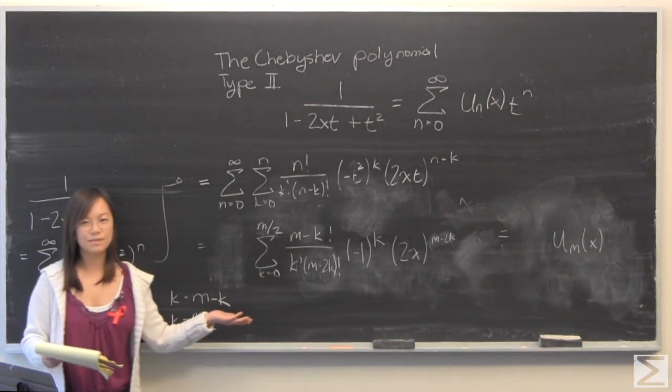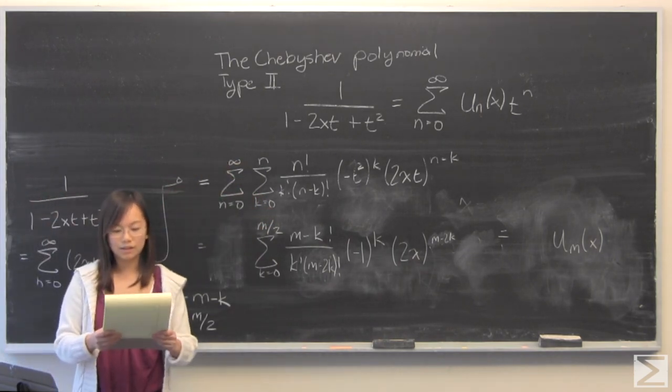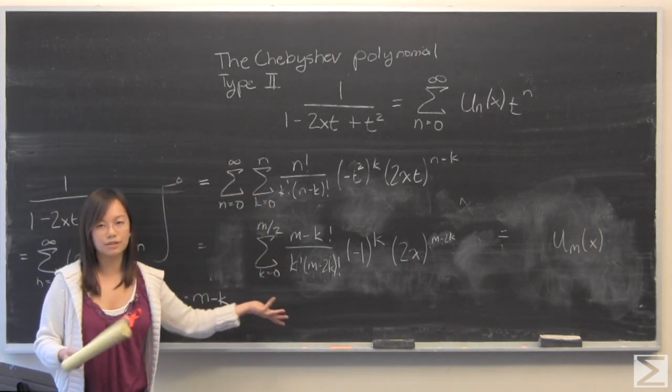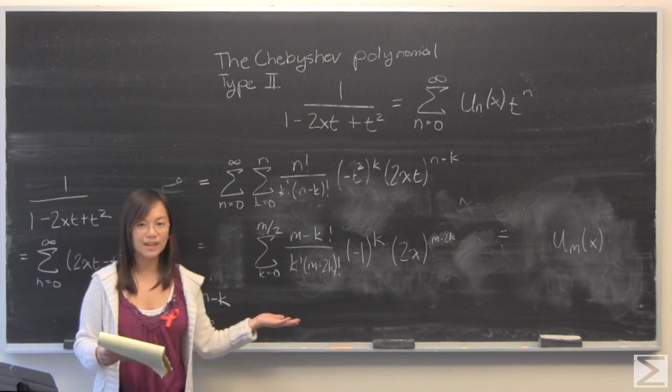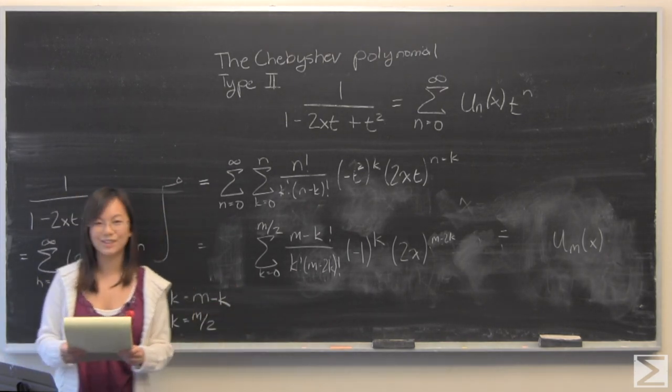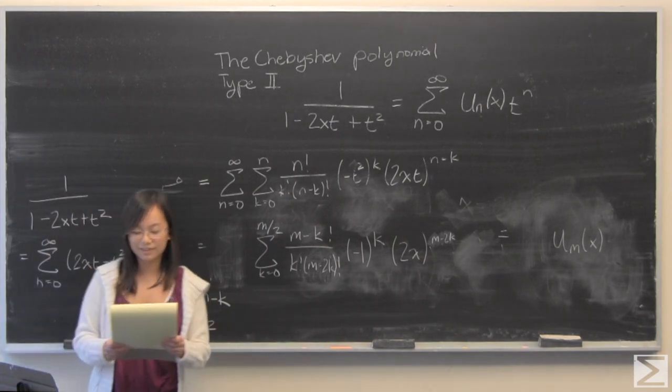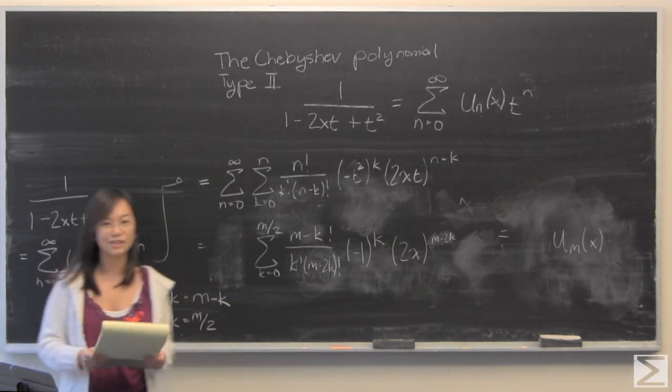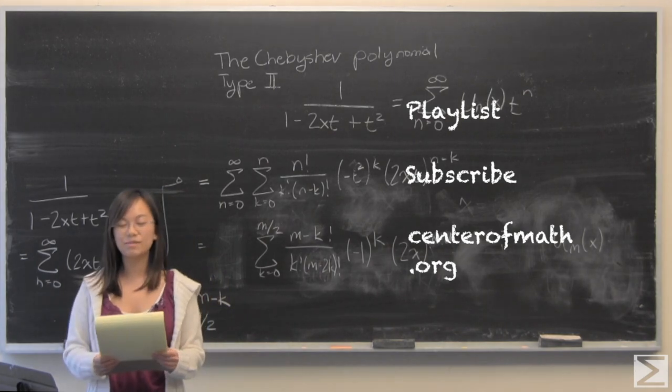This is the series representation of the Chebyshev polynomial u m or n, whatever you want to call it, of x. It is kind of weird, it is kind of cool. Orthogonal polynomials are very helpful and we hope you can use this in the future. That is it for this week's advanced knowledge problem of the week. Thank you very much for watching.